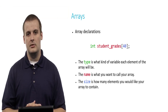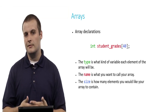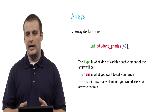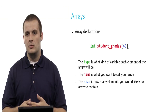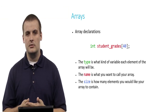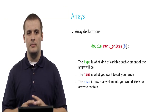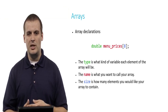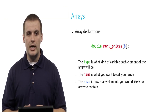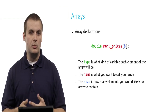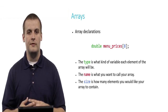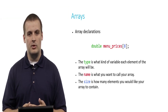For example, 'int student_grades[40]' declares an array called student_grades which consists of 40 integers. Here's another example: 'double menu_prices[8]' creates an array called menu_prices which consists of room in memory for 8 doubles.